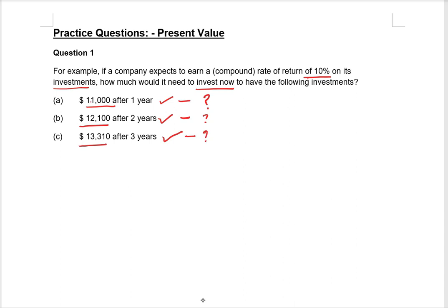In my previous session I discussed how to calculate present value. As you know, the present value is equal to future value divided by (1 + i) to the power n. If you apply this formula you can calculate the present value under each scenario.